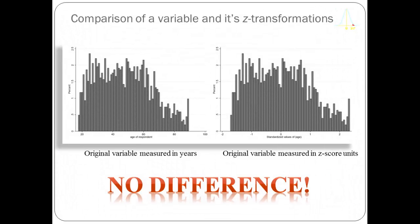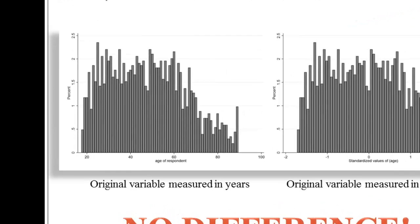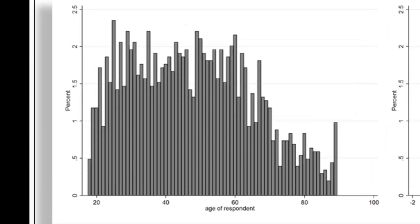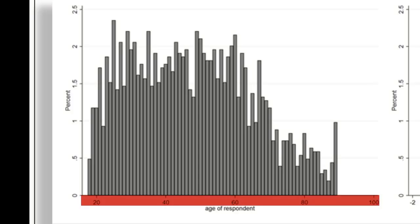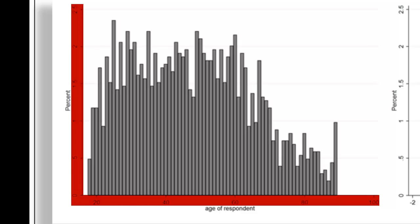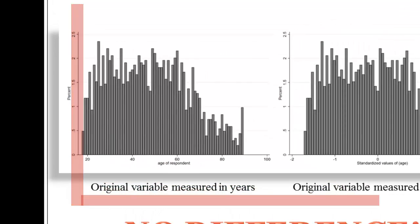Here's another example using 2010 data from the General Social Survey. The graphic on the left is a frequency distribution and a histogram of age for all the respondents. We have the ages along the x-axis and the percentage of people in each age group on the y-axis.